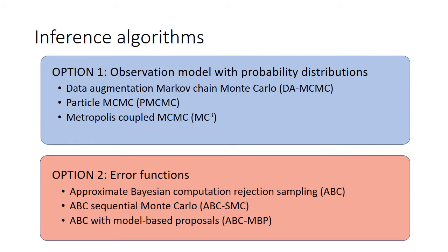Due to limitations of time, I'm just going to focus on talking about those methods in option two. The first of these is the simplest, the ABC rejection sampling algorithm. First, we specify a prior, which in this case assumes a flat distribution over a plausible range of parameter values for beta and gamma.